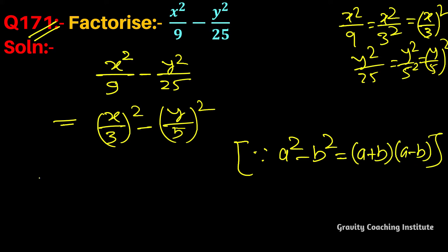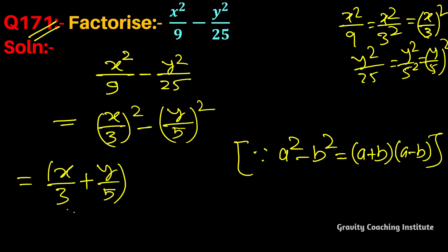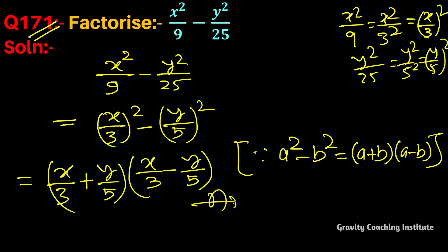So according to this identity, the answer is x upon 3 plus y upon 5 into x upon 3 minus y upon 5, which is the required answer.